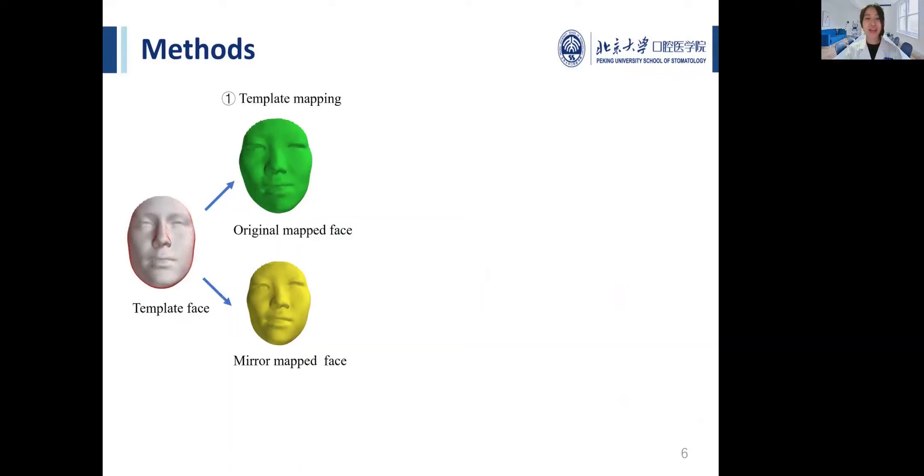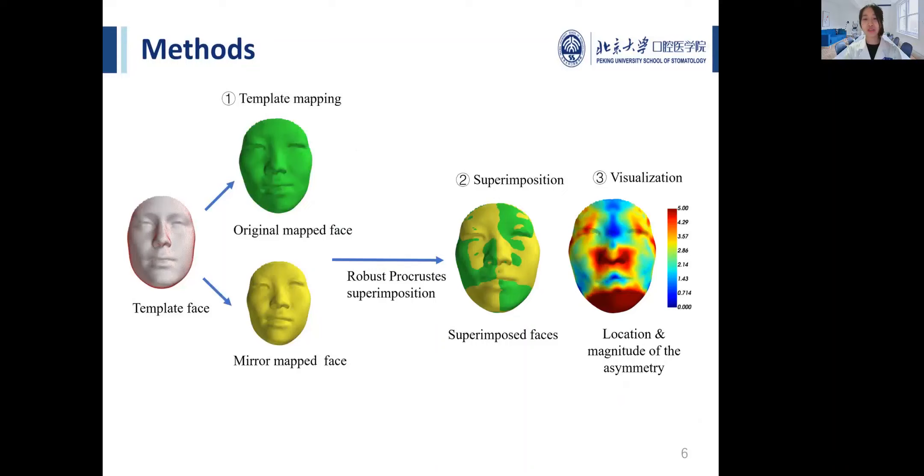Therefore, the differences between the superimposed face indicate where the asymmetry occurred. We visualize the location and the magnitude of asymmetry by color-coded map.